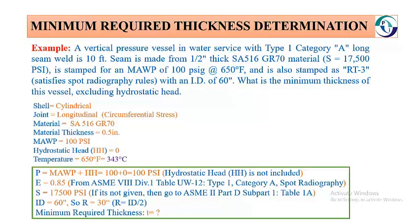This data is required to calculate the minimum required thickness. P equals maximum allowable working pressure plus hydrostatic head. The maximum allowable working pressure is 100 PSI and the hydrostatic head is 0, so 100 plus 0 equals 100 PSI. Hydrostatic head is not included as stated in this problem.